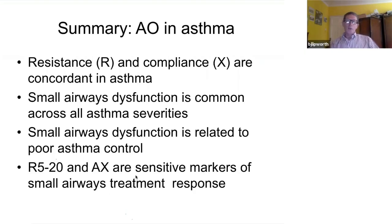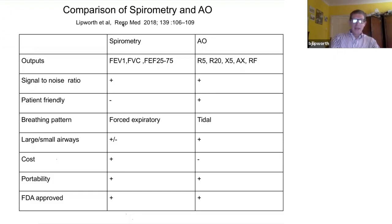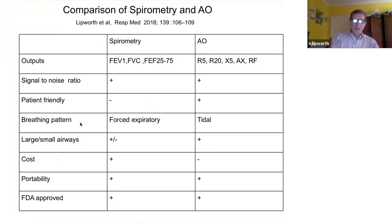Let's look at a head-to-head comparison. This is a review I wrote in Respiratory Medicine on the utility of measuring spirometry and airway oscillometry. Both have an excellent signal-to-noise ratio. I think spirometry is not patient-friendly because it's quite hard to perform a forced expiratory maneuver — particularly in COPD — breathing out all the way to residual volume. Airway oscillometry measures at tidal, normal quiet breathing, whereas spirometry requires a forced expiratory maneuver. How many patients do you see in everyday life doing a forced expiratory maneuver?